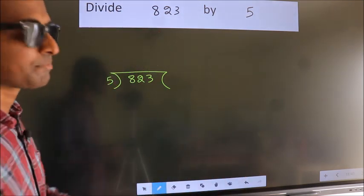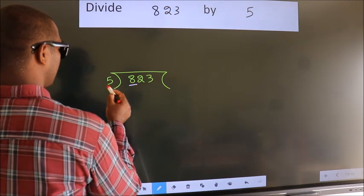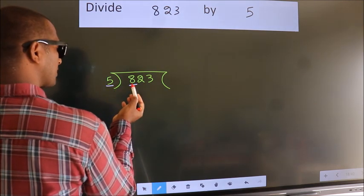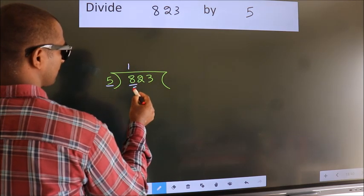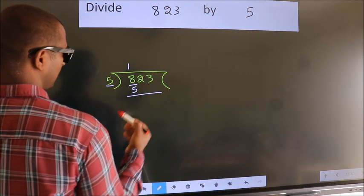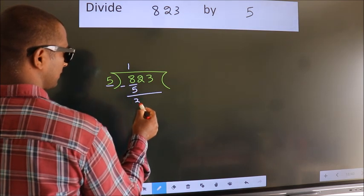Next. Here we have 8, here 5. A number close to 8 in the 5 table is 5 once 5. Now we should subtract. We get 3.